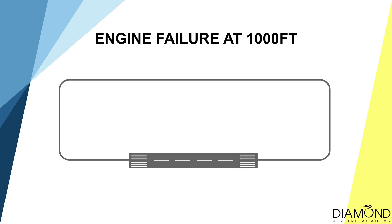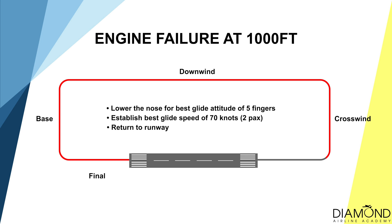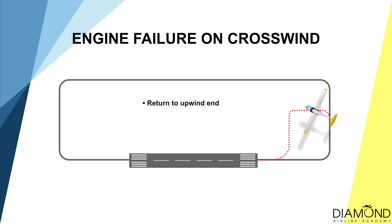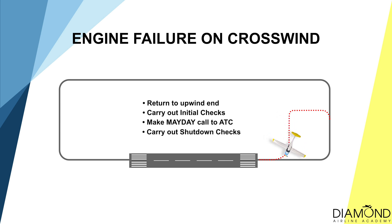If the engine failure occurs on crosswind at 1000 feet, the procedure is very similar to when the failure happens on downwind, base and final. Firstly, maximise the gliding distance by lowering the nose for best glide attitude and speed, and start turning towards the runway to try and make it back. If the failure occurs on crosswind, turn back to an upwind end of the runway and land in the opposite direction. As the aircraft is tracking towards the runway and time permits, conduct the initial checks, mayday call, and shutdown checks accordingly.